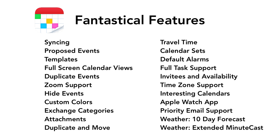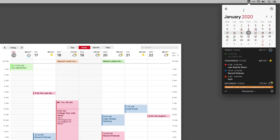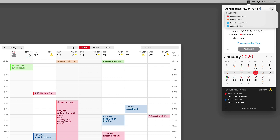There are two versions of Fantastical 3. One is a Premiere subscription-based service, and the other one is a free version of Fantastical. With this new version, you'll need to sign up for a free Flexibits account with end-to-end encryption to protect your privacy.